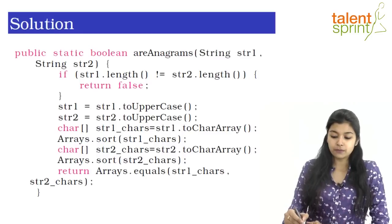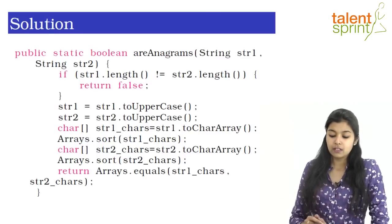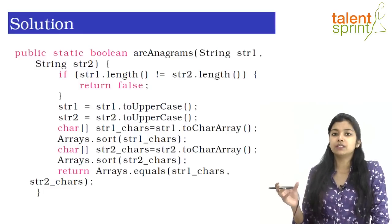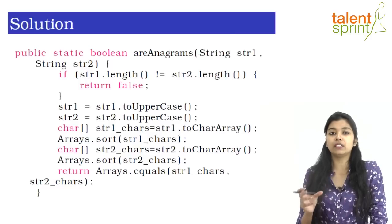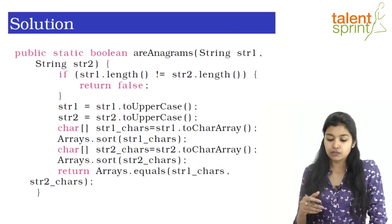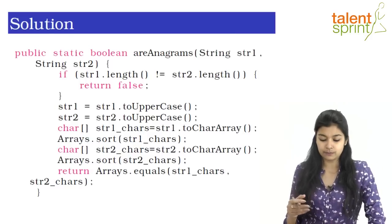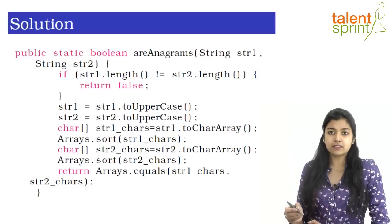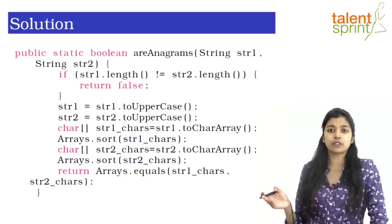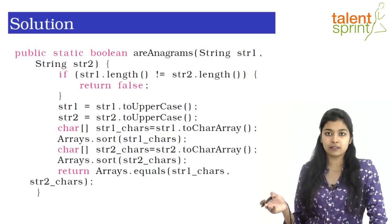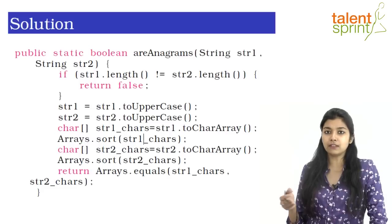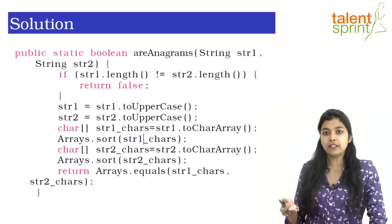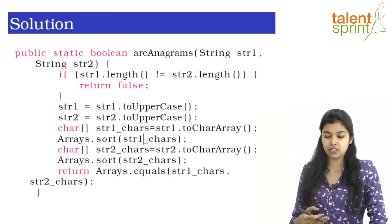First off, what we have done is in order for the two words to be anagrams, they have to be of similar length. So first off, we are starting by checking that only. If string1.length is not equal to string2.length, that means they are not anagrams. So we are straight off returning false. If this condition is satisfied, then we move on to the rest of the checks.